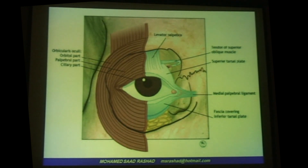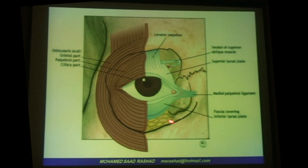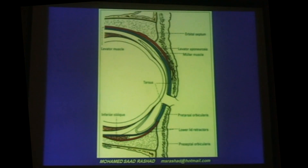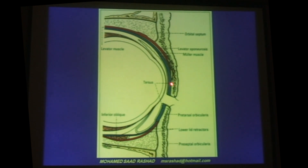The door to the orbit is the eyelid, so to approach the orbit you have to know the anatomy of the eyelid very well — the orbicularis, the orbital septum, the levator, and the tarsus. The anatomy of the upper lid differs from the lower lid. In the upper lid, the levator attaches to the lower part of the anterior surface of the tarsus, and the orbital septum attaches not to the tarsus but to the levator.